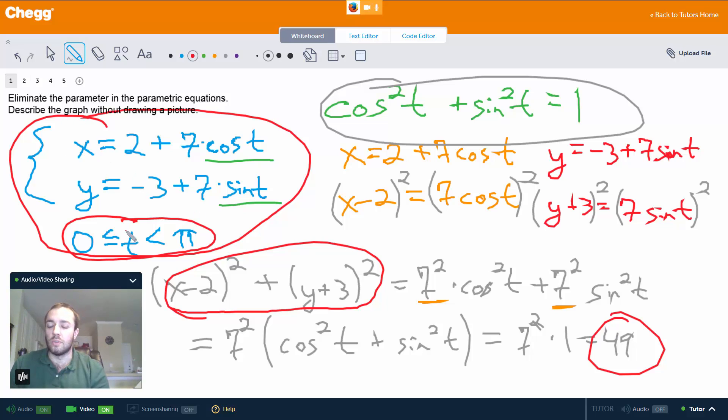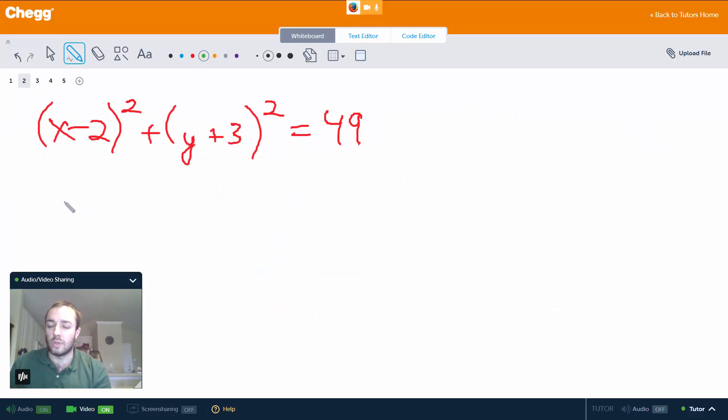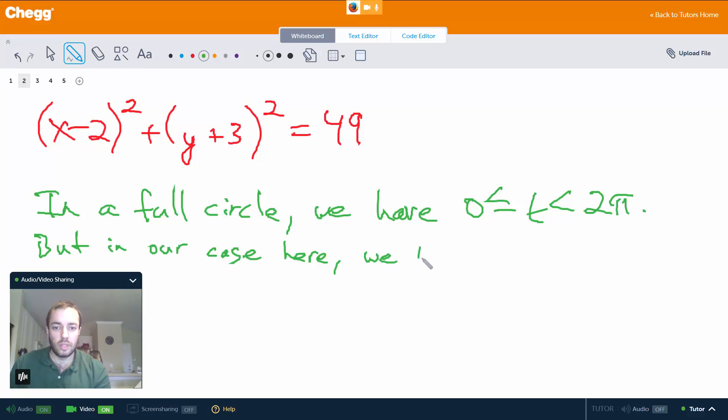Well notice that t goes from 0 to π. And yeah it's 0 ≤ t < π, but that doesn't actually matter. We don't have to worry about that. The important part is the π. So in a full circle we have 0 ≤ t < 2π. But in our case here we have 0 ≤ t < π.